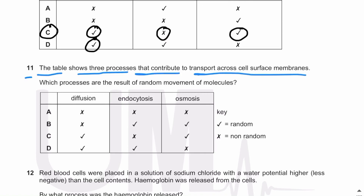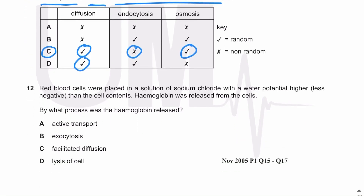MCQ number eleven: the table shows three processes that contribute to transport across cell surface membranes. Which processes are the result of random movement of molecules? Diffusion occurs due to random movement of molecules, and osmosis also occurs due to random movement. Endocytosis does not. Passive processes like diffusion and osmosis occur due to random movement; endocytosis, exocytosis, and active transport are active processes driven by ATP. The answer is C.